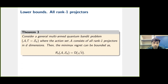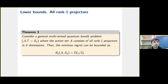For continuous action sets where the action set consists of all rank-one projectors in dimension d, the minimax regret is again bounded by √N. However, introducing a dimensional dependence here is an open problem. We are confident there is a dimensional dependence in this lower bound, but with our current techniques we cannot establish it.